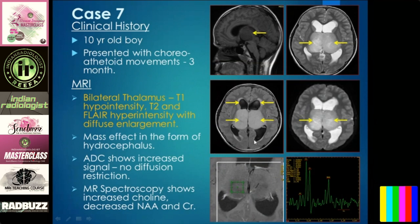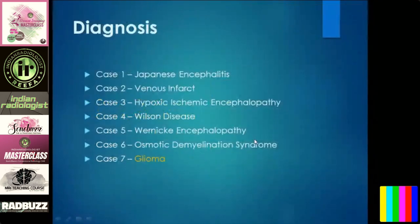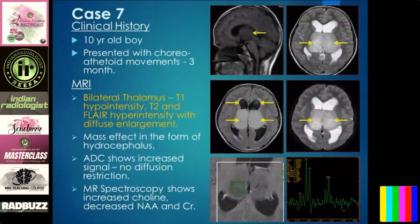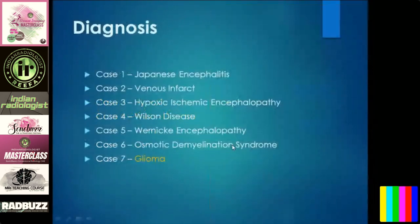MR spectroscopy showed increased choline peaks and decreased NAA. This was a classical case of glioma. You should have very good knowledge about glioma imaging and spectroscopic findings. In an exam, they also ask about the line of treatment — whether it is medical management or surgical management — for all the above conditions discussed.